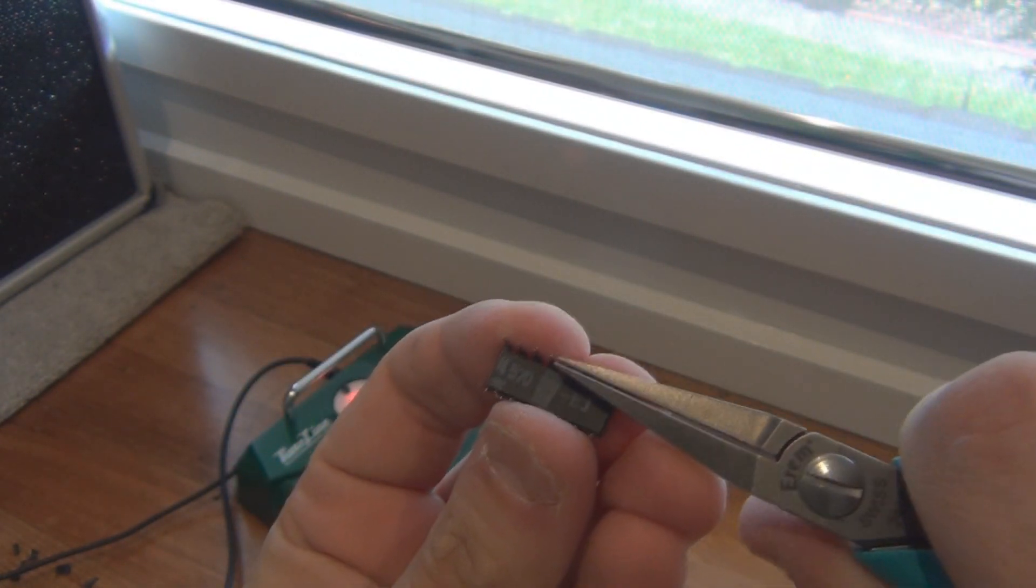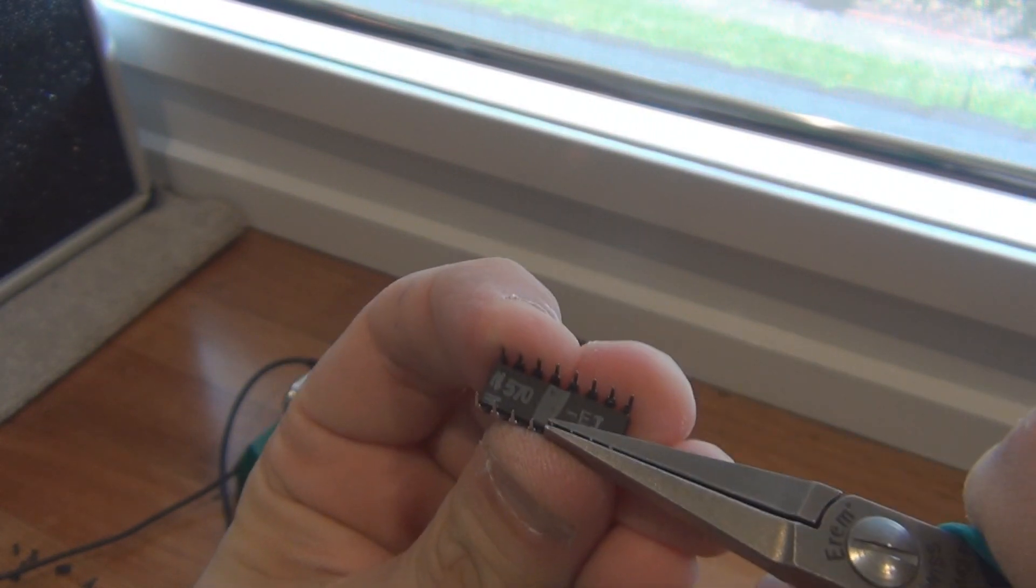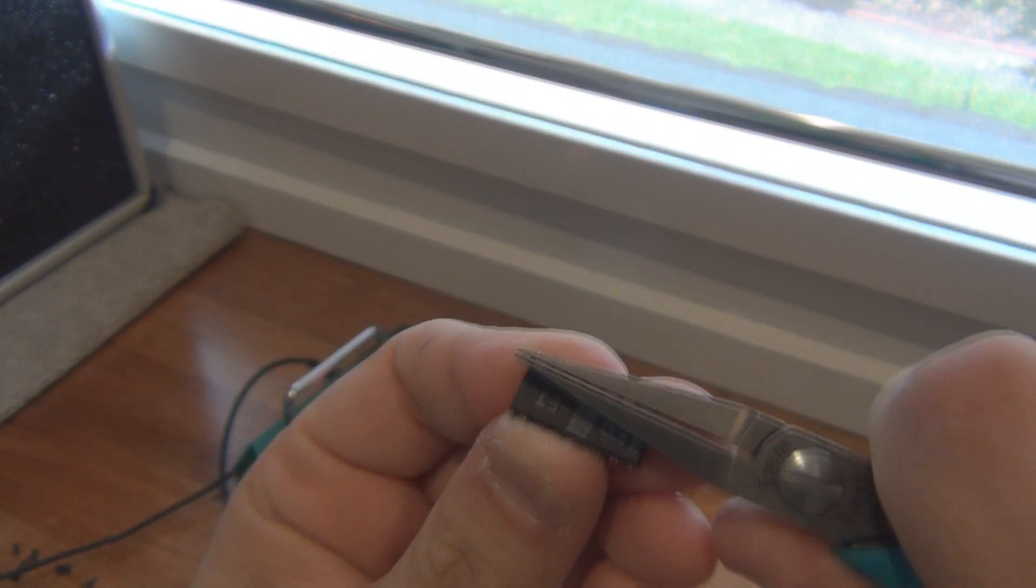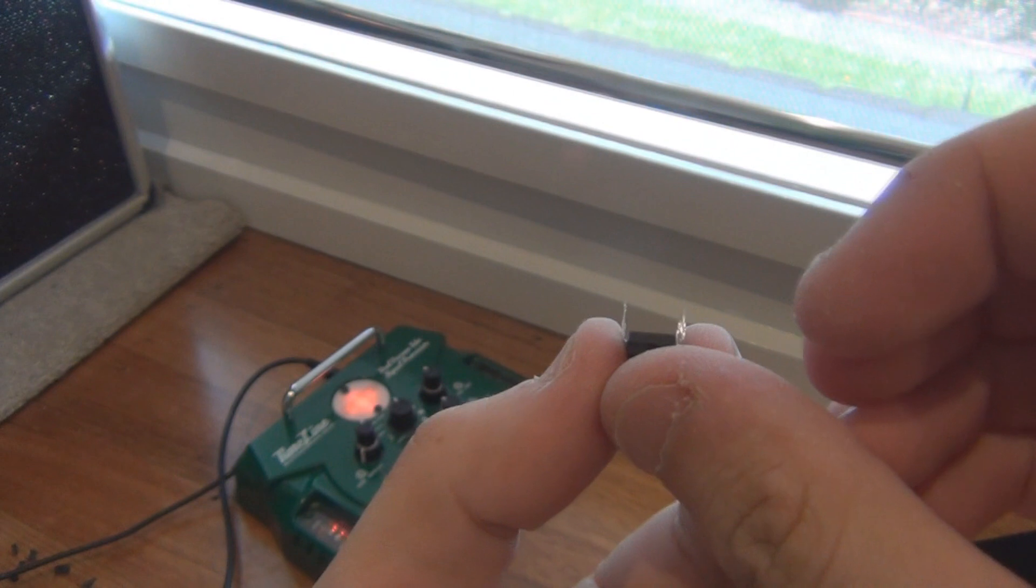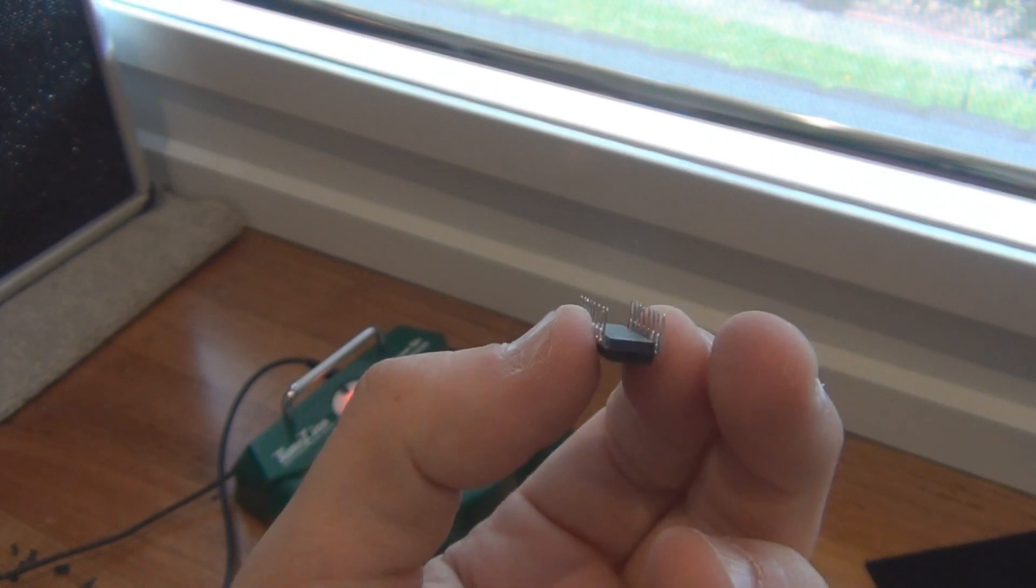I'll sight down the IC again. Sorry if you can't see what I'm doing here, it's quite a fine job. So if we look down now they should be slightly curved inwards, you might be able to see there's a bit of a curve going inwards. That'll fit into the IC socket really easily.